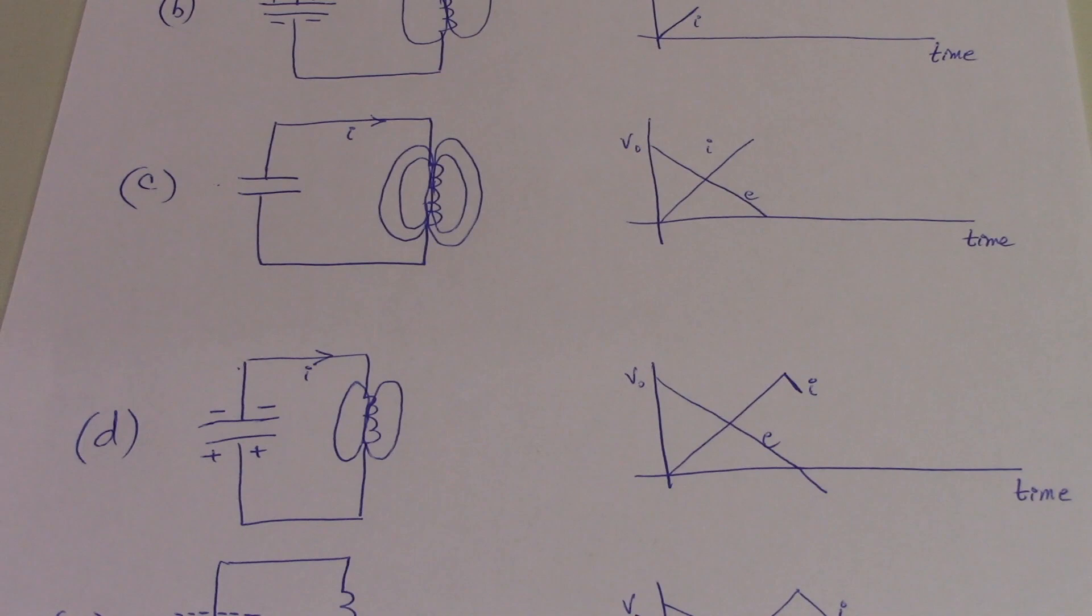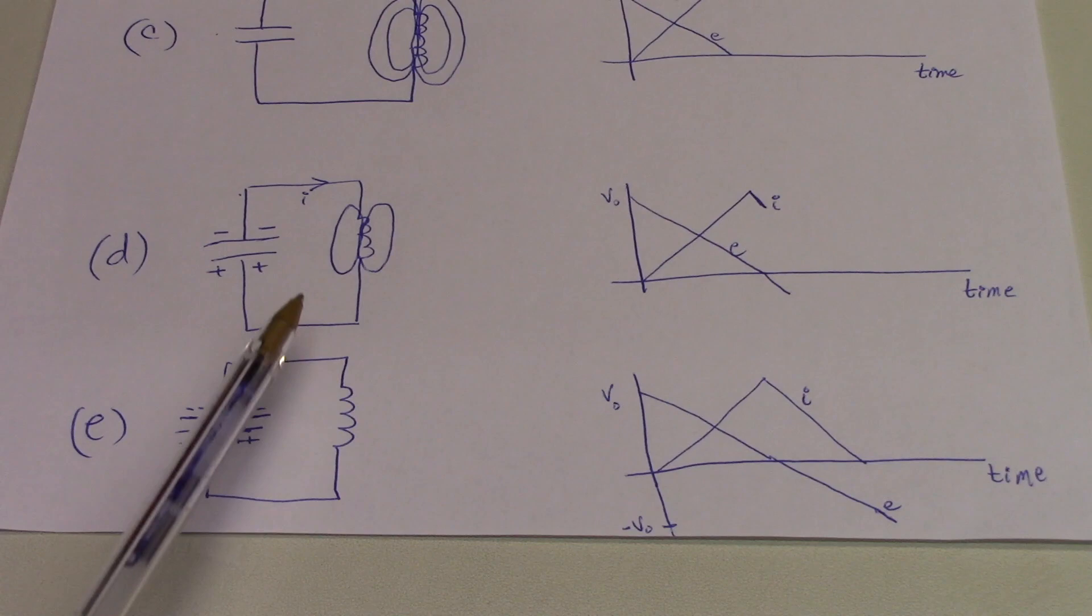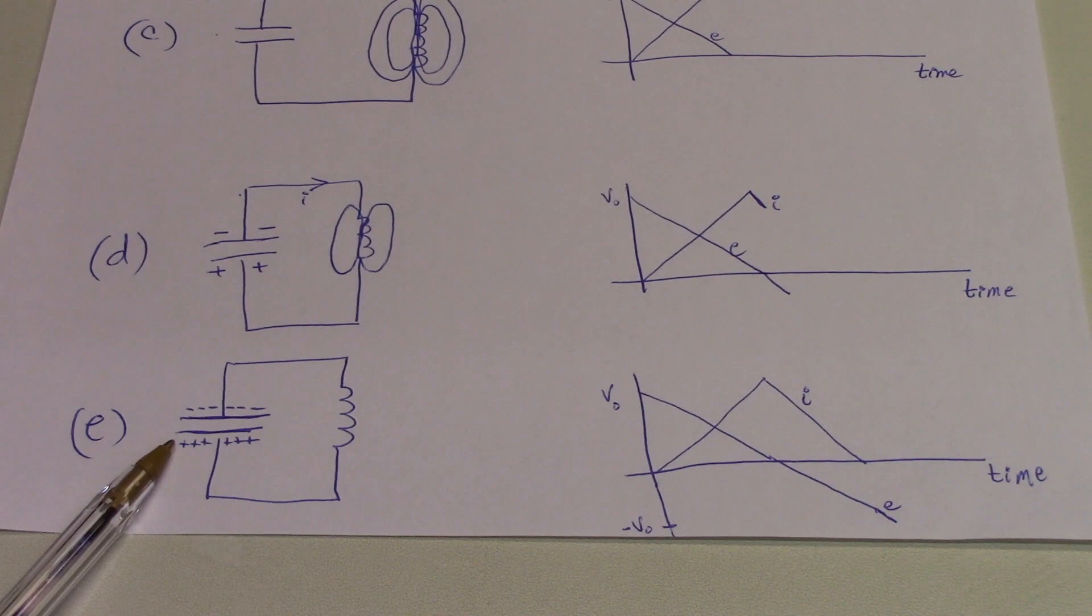This current continues to flow, as depicted in figure E, and charges the capacitor as charge flows through the circuit and onto the opposite side of the capacitor. When this is complete, we have the capacitor charged in the opposite sense as we began with.